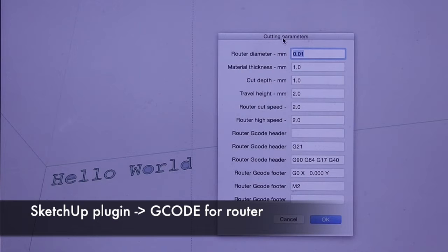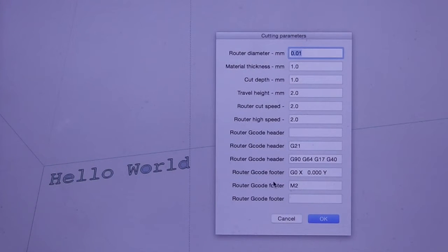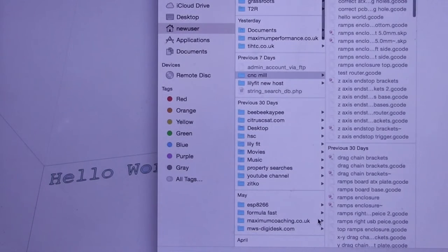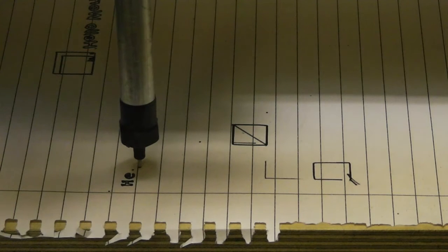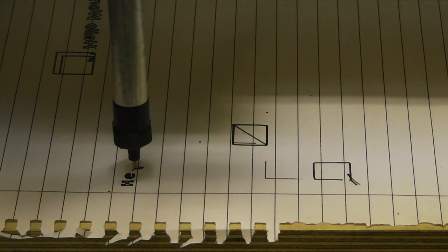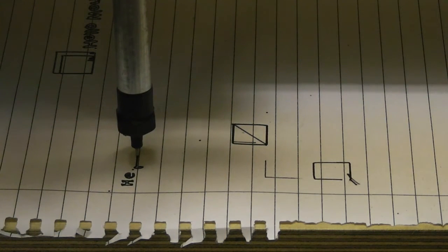So I've just coded a router extension for the plugin that I've already written for SketchUp for the laser cutter. To output g-code for a router. I just made this simple hello world SketchUp file. I'm just going to export it. Save it down. Then I'm going to send it to the router.